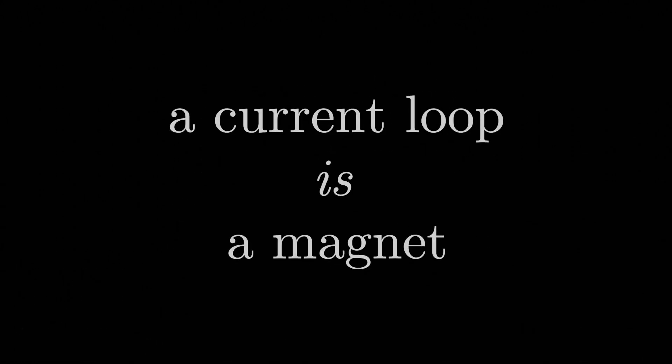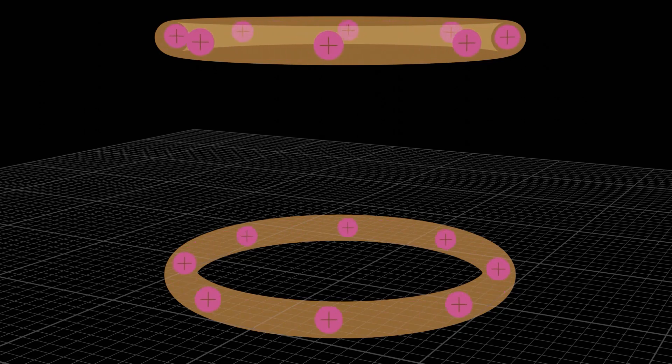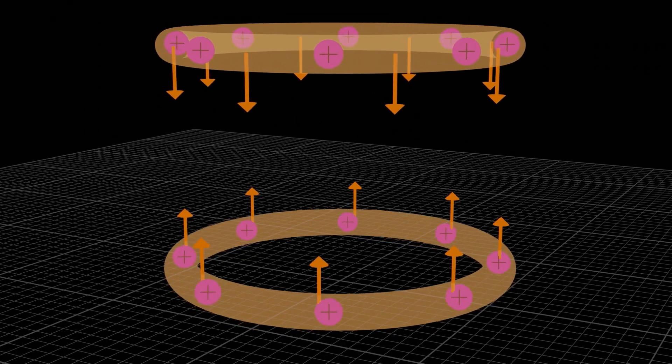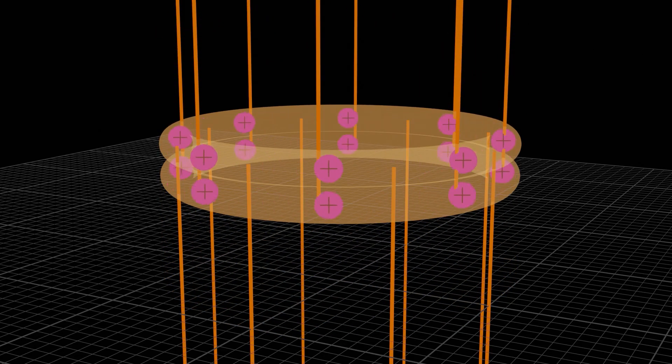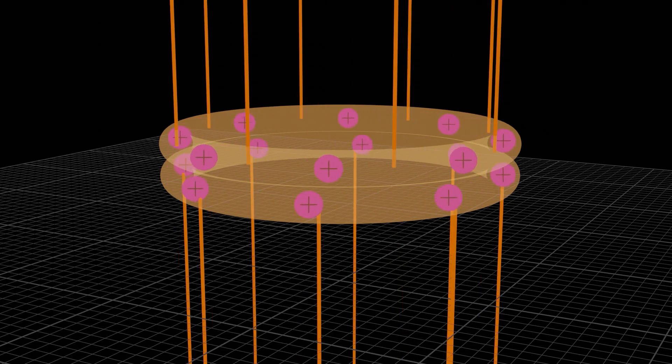It turns out we can actually say that a current loop is a magnet. A very weak one, of course, but still technically a magnet. When we see two bar magnets attracting each other when their poles point in the same direction, it's exactly the same set of physics at play when two current loops attract each other when their currents are going in the same direction. And of course the same is true with the opposite directions.